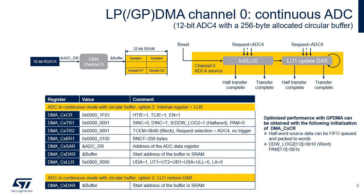LLI 0 provides all the required initialization while LLI 1 only restores the destination address register. The CX LLR register is not updated after LLI 0, so that each time the buffer is full, LLI 1 restores only the destination address. Two interrupts are enabled: half transfer complete and transfer complete.